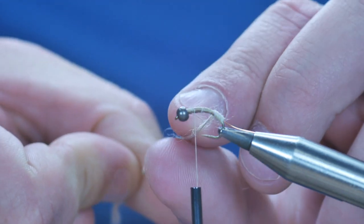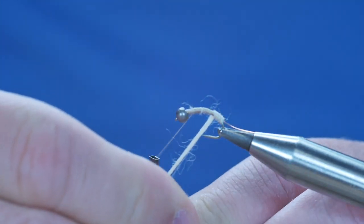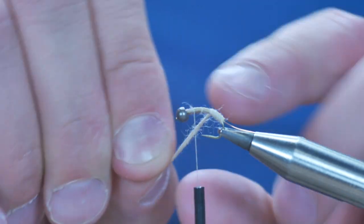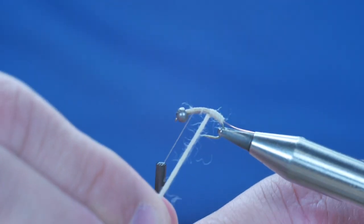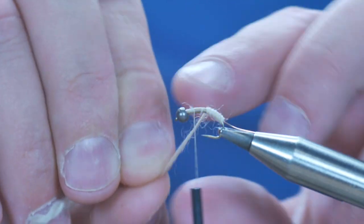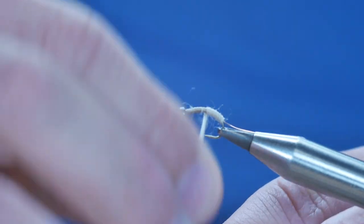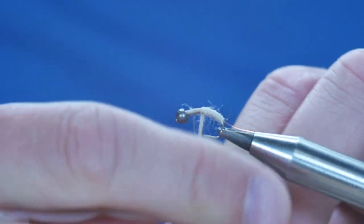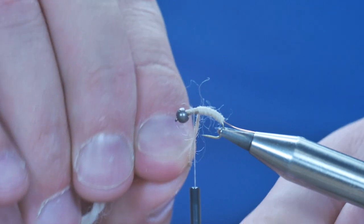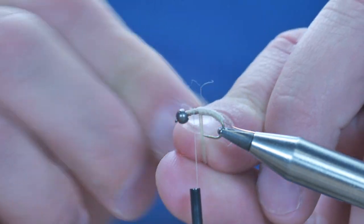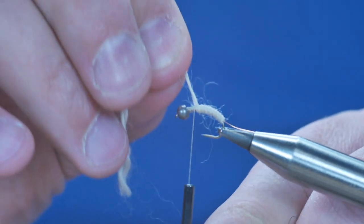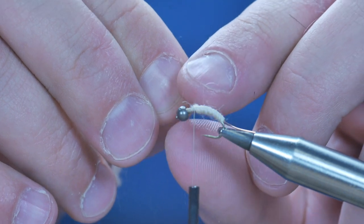Now I'm taking my time here, but this is actually a very quick fly to tie. The wool makes an excellent body material. It's easy to work with and quick to work with, no messing about with any dubbing. It's just straight on the shank of the hook.